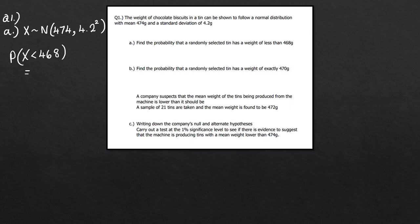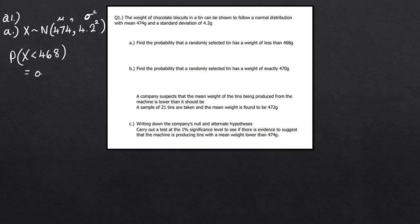This isn't directly a hypothesis testing question - it's more of a warm-up to make sure you're confident with normal distribution probabilities. Using your graphical calculator, input 468 as the upper value and something like minus 999 as the lower, with mean 474 and standard deviation 4.2. If you input this correctly you should get 0.0766.